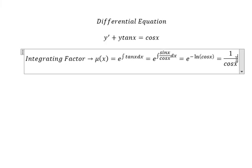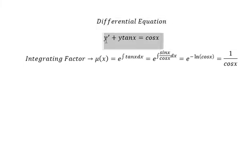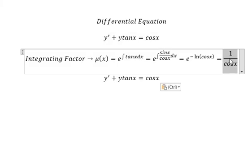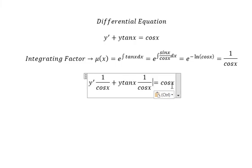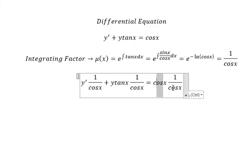over cosine x. That means we need to multiply one over cosine x for both sides, and this...